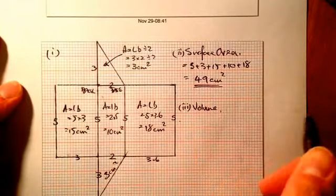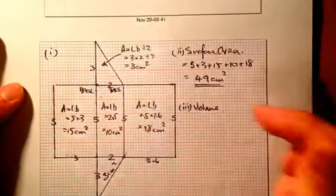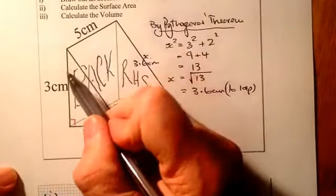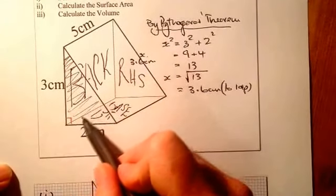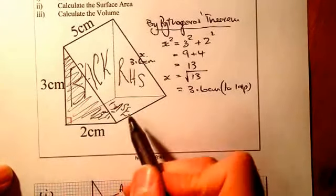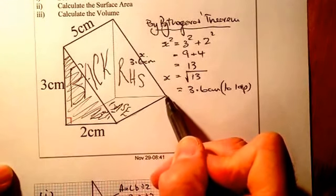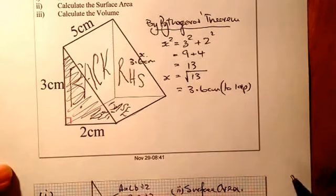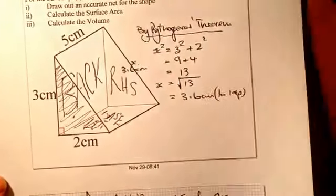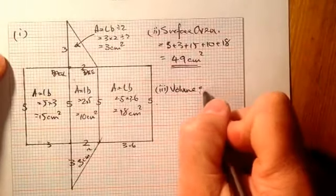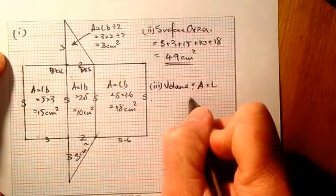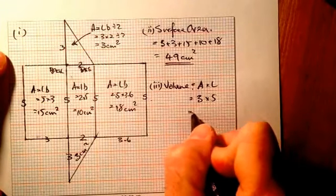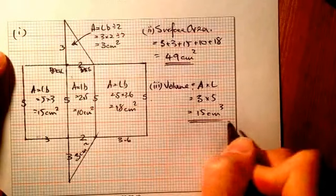The volume of a triangular prism — for any prism, if I work out the area of that face I just need to multiply it by the length going back, and that gives me the volume. The area of the triangle is three, times by the length which is five — volume equals area times length: three times five gives me 15 centimetres cubed.